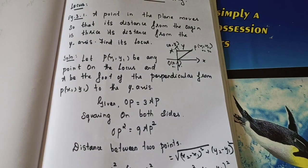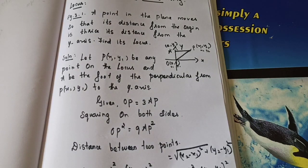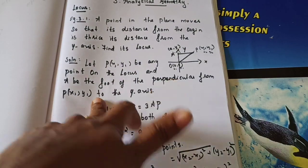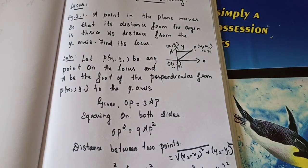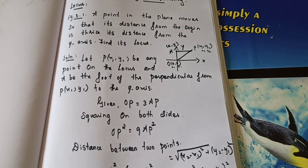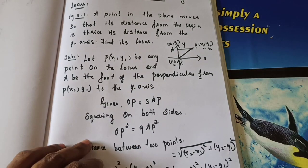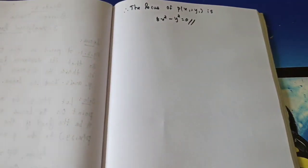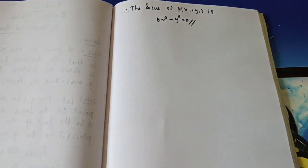To recap: let P(x₁, y₁) be any point on the locus — same as in your book. You can also take the point as (x, y) directly; both are correct. The condition OP = 3AP is squared to get OP² = 9AP², then the distance formula is applied. You will get the equation, and at last you replace x₁, y₁ with x, y to get the locus equation. Very easy.